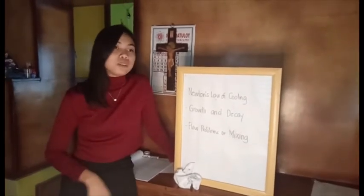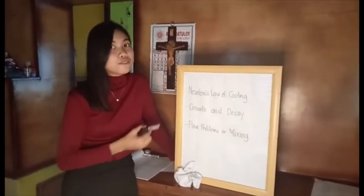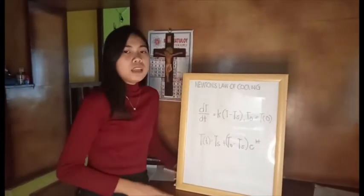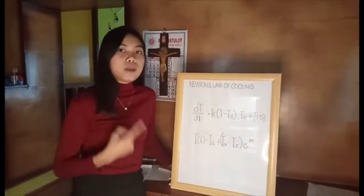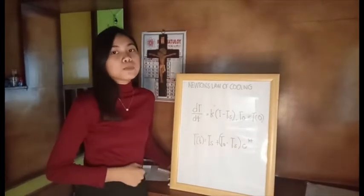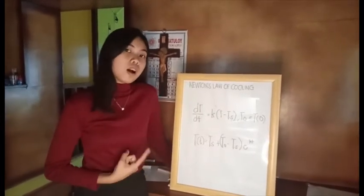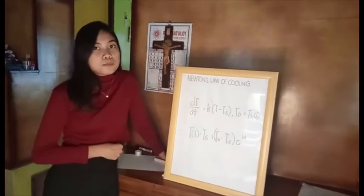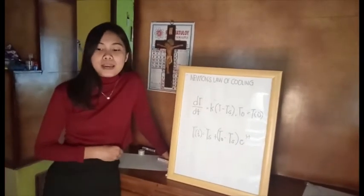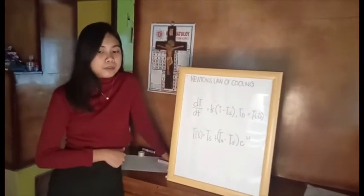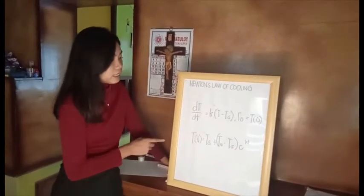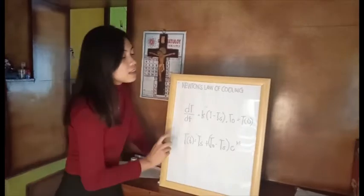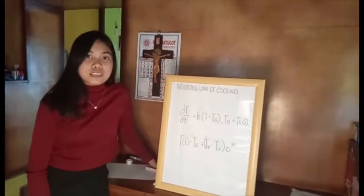So first, we are going to discuss about Newton's law of cooling. Newton's law of cooling states that the rate of cooling of an object is proportional to the difference between the object and its surrounding. The rate of the temperature T of an object is given by the initial value problem dT/dt is equal to k times (T minus T sub s) and T sub zero is equal to T₀.